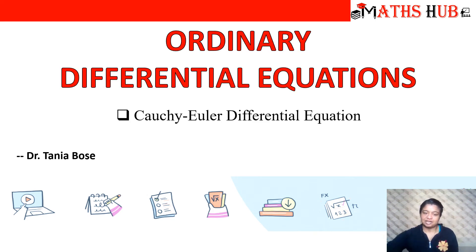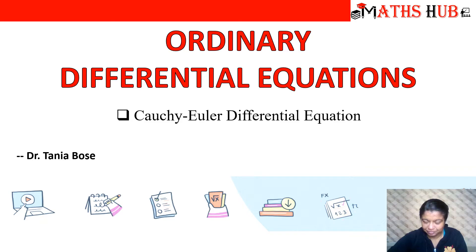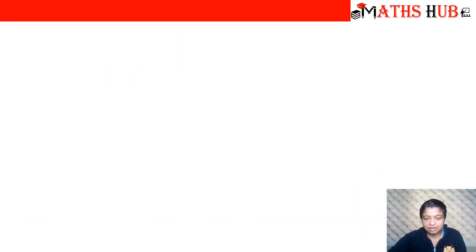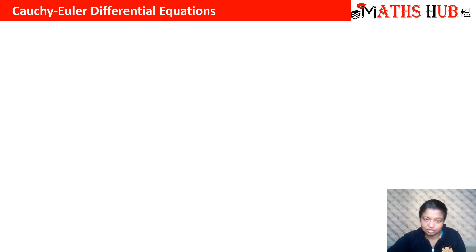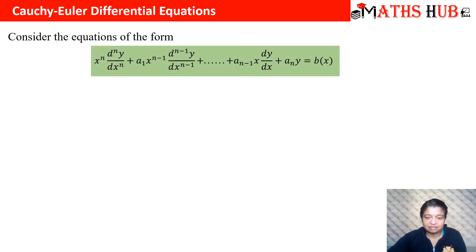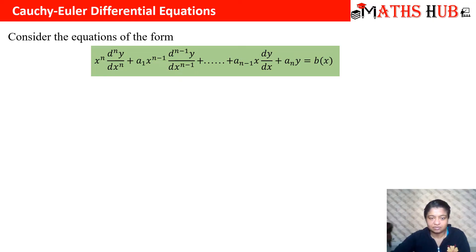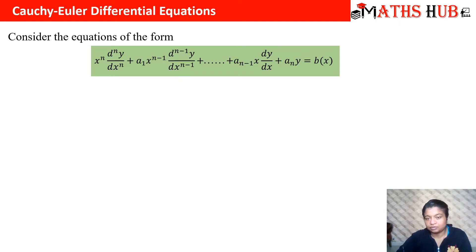Hello students and welcome to my channel MathsHub. Today in this video I'll tell you about the Cauchy-Euler differential equation. A general Cauchy-Euler differential equation looks like x^n times d^n y/dx^n plus a1 times x^(n-1) d^(n-1)y/dx^(n-1) plus ... plus a_(n-1) times x dy/dx plus a_n y equals b(x).